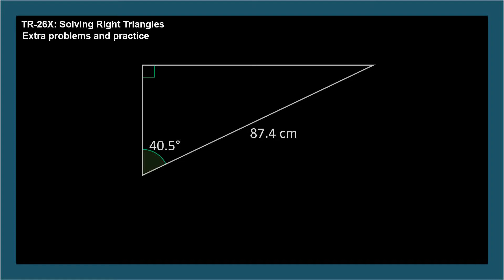Each unknown has a simple solution. Pause if you like to figure out the strategy for each. Getting the missing angle is easiest. All of the angles add up to 180 degrees.